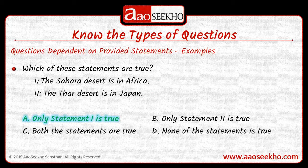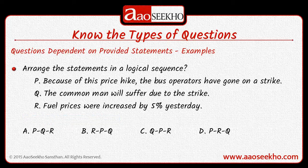So we will choose option A — only statement 1 is true. Let's take another example of statement-dependent questions. Here the question says: Arrange the statements in a logical sequence. We have three statements — Statement P, Statement Q, and Statement R — and we have to arrange them in a logical sequence.